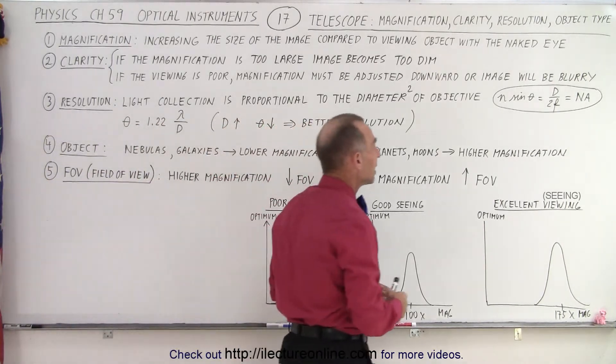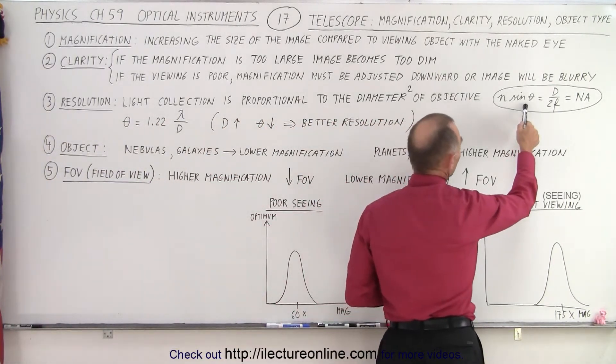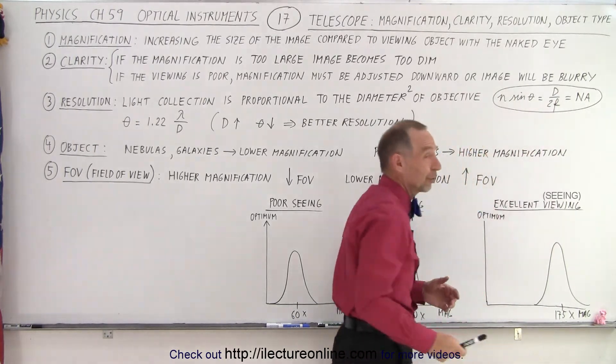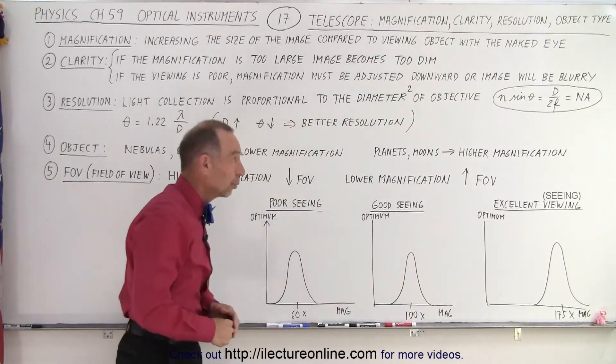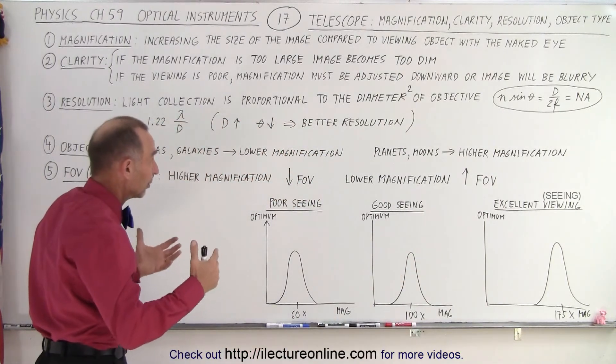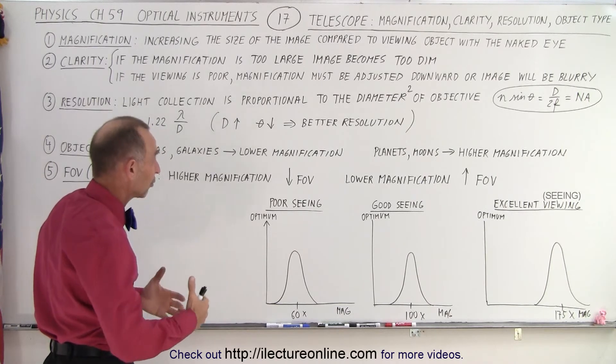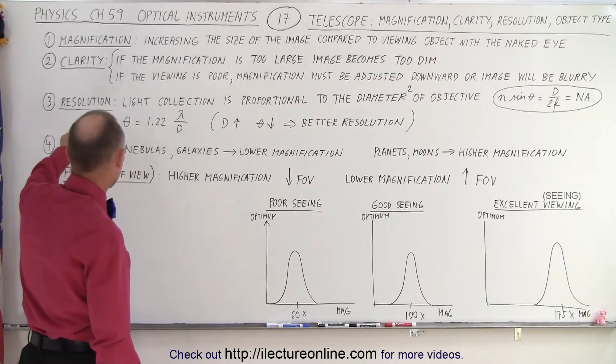Notice that the numerical aperture is n times the sine of theta, or the diameter divided by about twice the focal length. So again, a bigger diameter lens will give you a better viewing condition. You get more light coming in, better resolution, and the whole thing will give you a better picture.